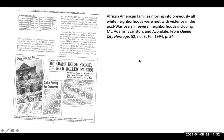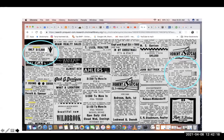African American families moving into previously all-white neighborhoods were met with violence in the post-war years. In several neighborhoods including Mount Adams, Evanston, and Avondale, two Black families moved into the lower level of a house and it was stoned by a mob of whites. The police were called but didn't do much. A white woman in the community spoke up against what the white mob did, and they came back to hang an effigy of her in the neighborhood.